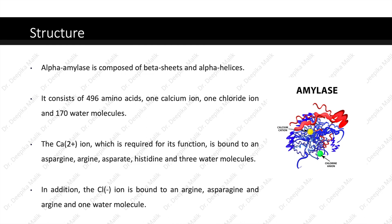Now let us see the structure of amylase. Alpha-amylase is composed of beta sheets and alpha helices. It consists of 496 amino acids, 1 calcium ion, 1 chloride ion and 170 water molecules. The calcium ion, which is required for its function, is bound to an asparagine, arginine, aspartate, histidine and 3 water molecules. In addition, the chloride ion is bound to an arginine, asparagine, an arginine and one water molecule.